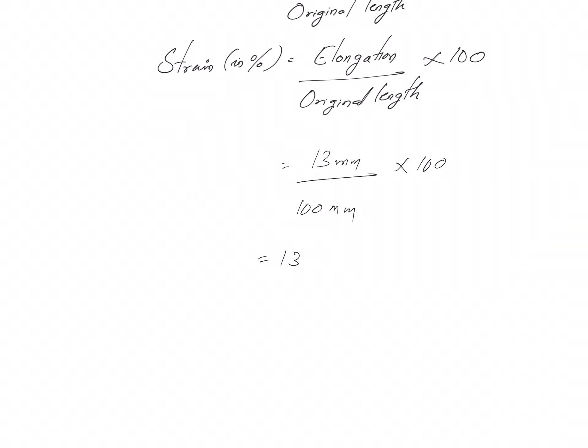All these are simple expressions. Now once we know the elongation - so elongation is 13 mm, the original length of the specimen is 100 mm - so the strain in percentage amounts to 13%. So this is the answer.